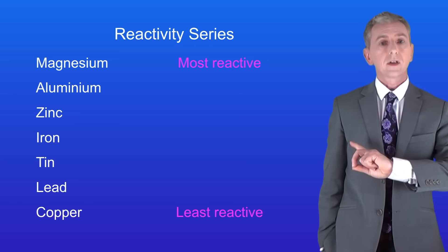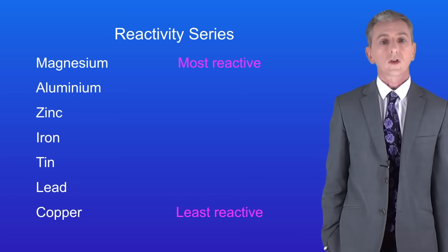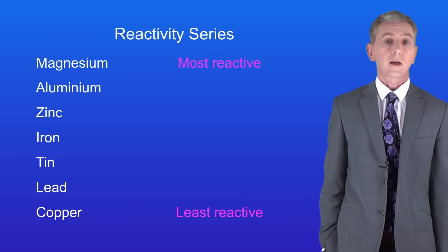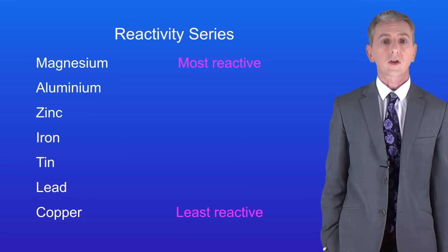This shows you the reactivity series of the metals. At the top we've got the reactive metals such as magnesium and aluminium and at the bottom we've got the less reactive metals such as lead and copper. I'm only showing you here a small selection of the metals.